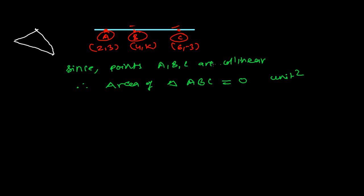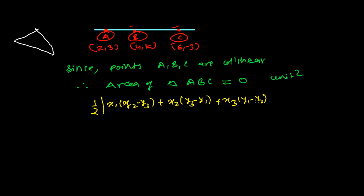Now let's find the area of the triangle. To find the area of a triangle, you know the formula is one-half times [x1(y2 − y3) + x2(y3 − y1) + x3(y1 − y2)] = 0. You can use this formula directly or use the shortcut method — whichever you prefer. Let's use the formula first.